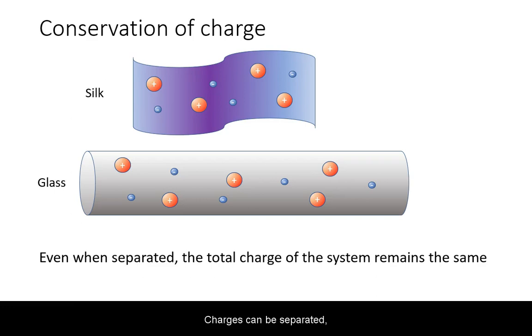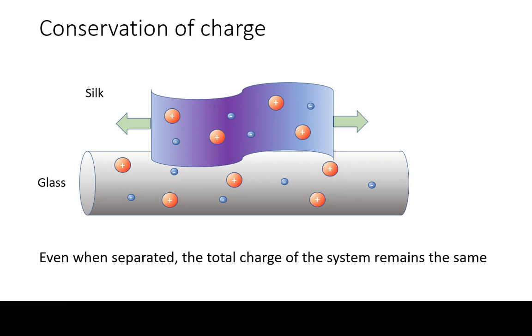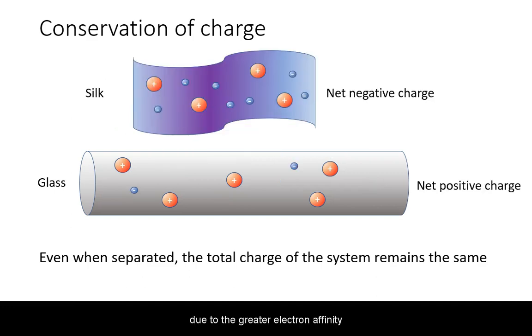Charges can be separated, but they cannot be destroyed. If I were to rub a glass rod repeatedly with a silk cloth, due to the greater electron affinity of the molecules that make up silk, it's going to attract some of the electrons away from the glass.